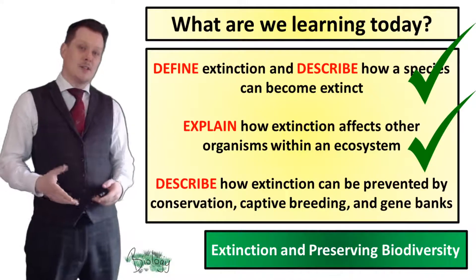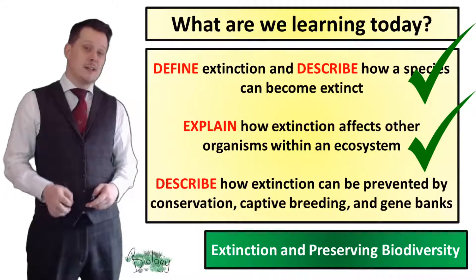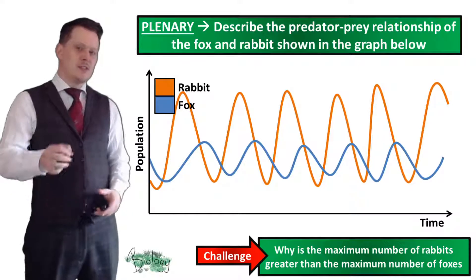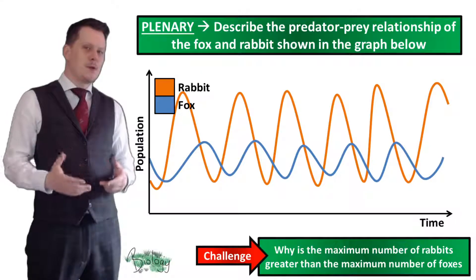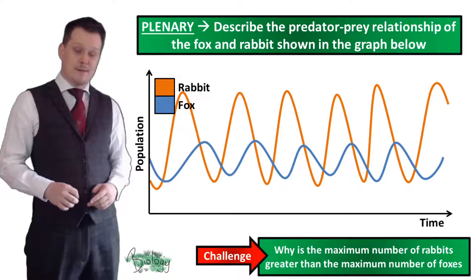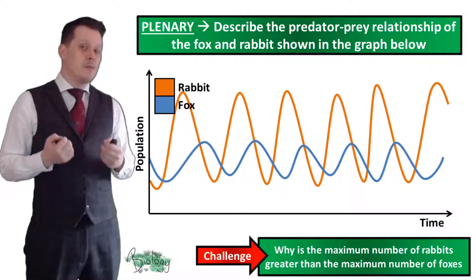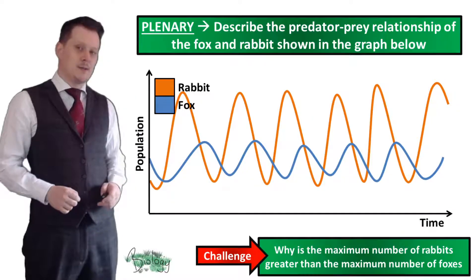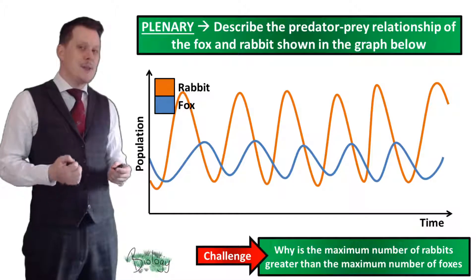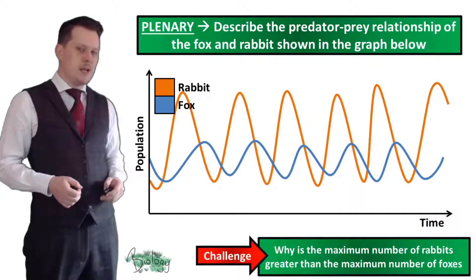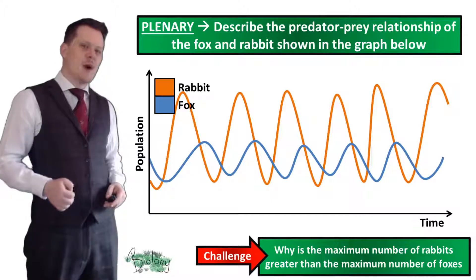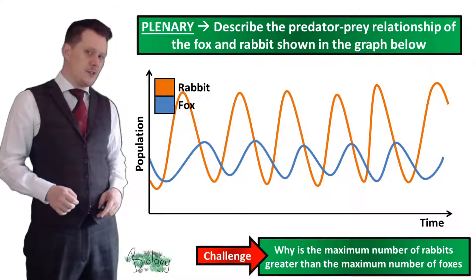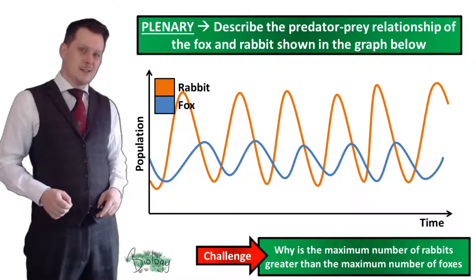Now we have described how extinction can be prevented by conservation, captive breeding, and gene banks. I'd like you to describe the predator-prey relationship of the fox and the rabbit in the graph, and comment on the biodiversity of the ecosystem they live in. The numbers of both fluctuate up and down — relate that to whether there is a net change in the population of rabbits and foxes. For a challenge, state why the maximum number of rabbits is greater than the maximum number of foxes. That covers all you need to know about extinction and preserving biodiversity — I hope you've had a great lesson!